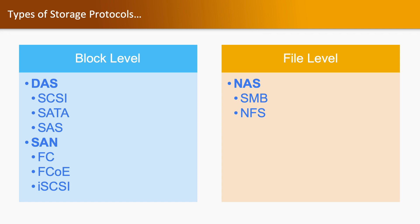Now, types of storage protocols. We have two types of storage: one is block-level and another one is file-level. For block-level, we have DAS and SAN. In DAS, we have SCSI storage, SATA storage, and SAS storage. For SAN, we have FC storage, FCoE, and iSCSI. FC is known as Fiber Channel, whereas FCoE is known as Fiber Channel over Ethernet. For file-level storage, we have NAS, which includes SMB and NFS.